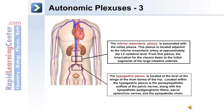The hypogastric plexus is located at the level of the wings of the ileum bones of the hip. Located within the hypogastric plexus is the parasympathetic outflow of the pelvic nerves, along with the sympathetic post-ganglionic fibers, sacral splanchnic nerves, and the sympathetic chain.